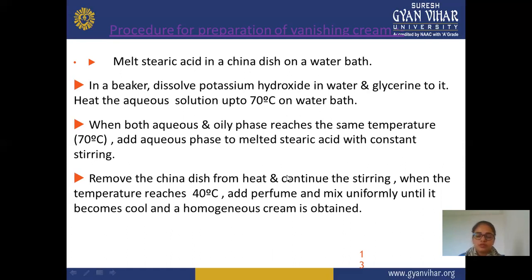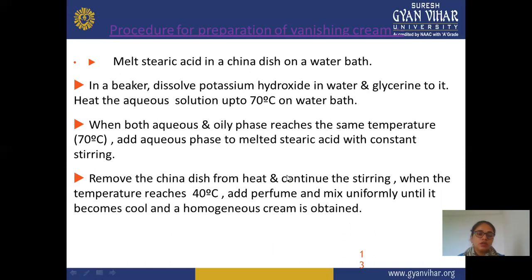When it reaches room temperature, the liquid starts solidifying into a semi-solid cream. Remove the china dish from the heat and continue stirring until the temperature comes to about 40 degrees Celsius. At this point, add perfume and mix uniformly until a cool and homogeneous cream is obtained. The perfume is added during mixing when the temperature has lowered.